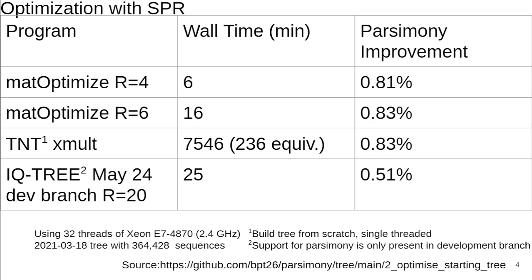Results on the following two slides are from optimizing a tree with around 360,000 samples using 32 threads. matOptimize can achieve a similar or better parsimony improvement with much smaller runtime compared to more general-purpose tools. We used the developing version of IQTree because the release version does not support optimizing for unweighted parsimony. TNT is single-threaded and had not finished running by the time of recording.